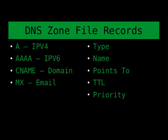What it's pointing to depends on what type of record we're dealing with. An A record points to an IPv4 address. A quad-A record points to an IPv6 address. A CNAME record points to a different domain name. And an MX, or mail exchanger record, points to a domain name that handles email for whatever that name is — whether it's the main domain or a subdomain.